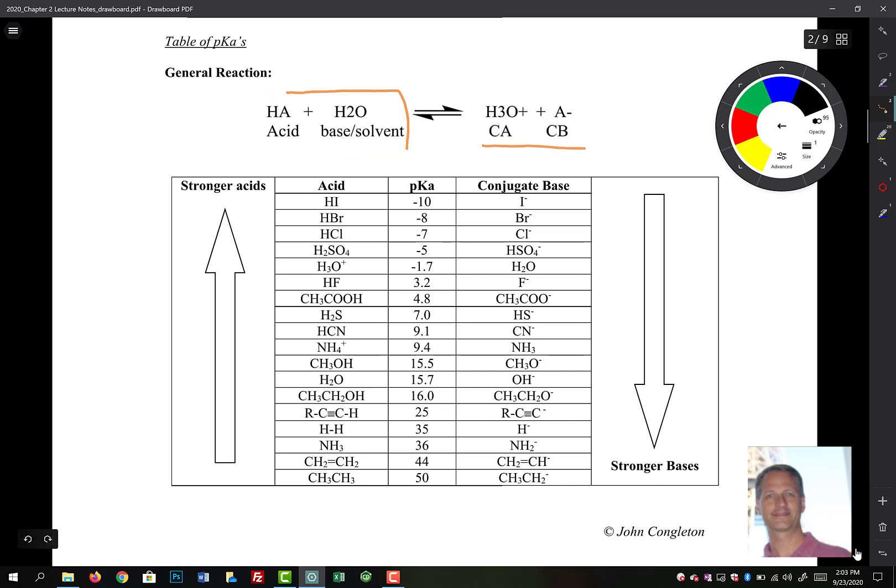We get H3O plus and the conjugate base, A minus. Really those are H3O plus, and of course that's H2O. We have to keep this base constant as we go through, and that way we can compare what our pKas are.